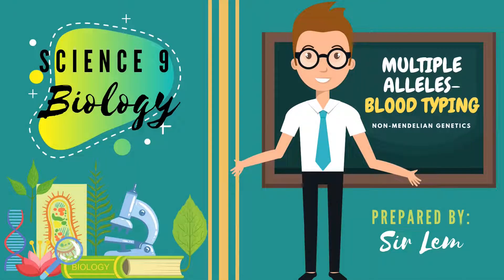Hello students. Welcome back to our science video. On our previous videos, we discussed the first two examples of non-Mendelian genetics, which are incomplete dominance and sex-linked traits. For today's lesson, we will discuss the first common example of multiple alleles, which is the ABO blood typing.